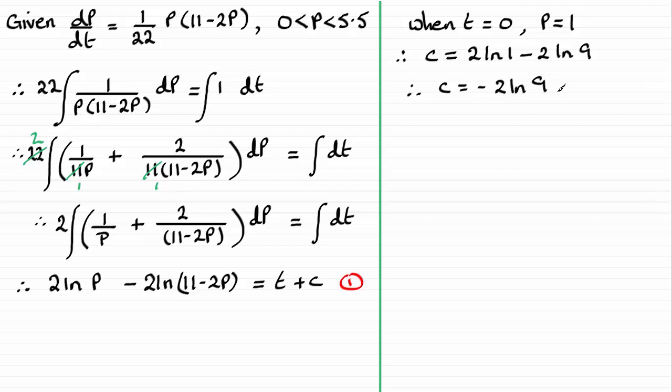Now all I need to do next is just substitute this value of minus 2 natural log of 9 back into equation 1 here. And I'm going to rearrange it for t. So I'm just going to add 2 natural log of 9 to both sides. If you do that, you're going to get this result for t. And so all I need to do now is just double the value of p. So p is going to be 2, representing 2,000 meerkats.